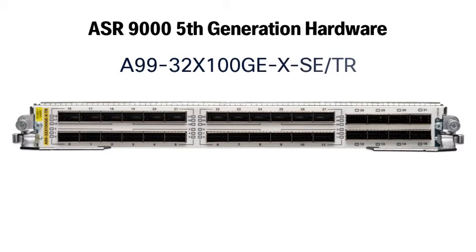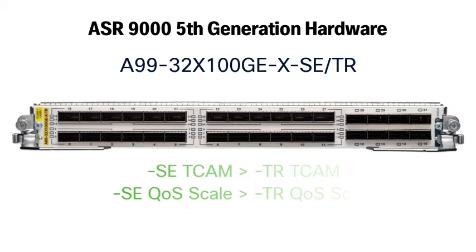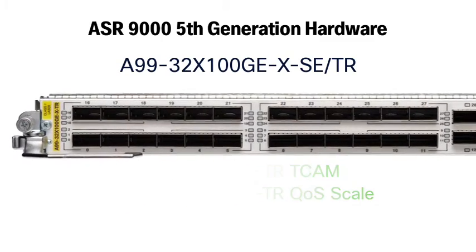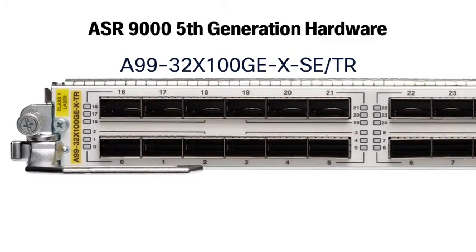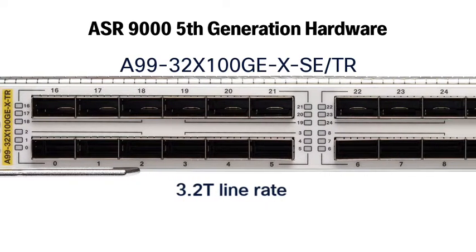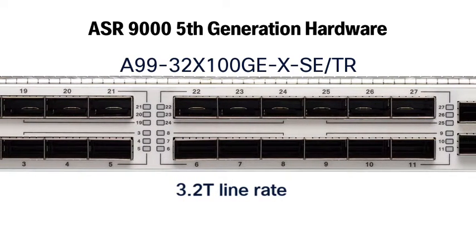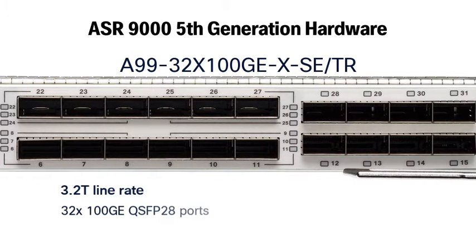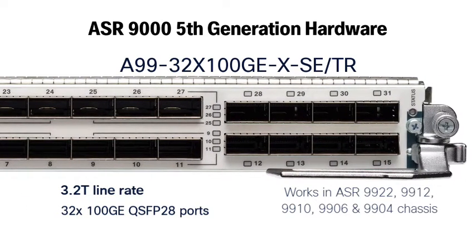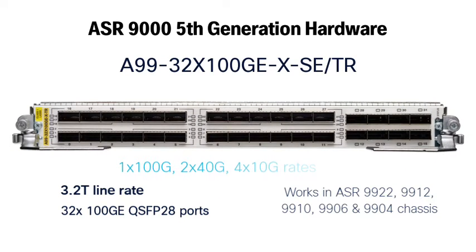Next we'll look at the line cards, starting with the 32x100 GigE port line card, compatible with A99-type chassis. Again there are SE and TR flavors — the SE or service edge optimized version gives you more TCAM space and better QoS scale than the TR version. With 3200 gig ports, this line card can support a throughput of 3.2 terabits. All ports support QSFP28, and the first 21 ports can also break out into 4x25 gig or 4x10 gig ports, so this line card can support three different port speeds.